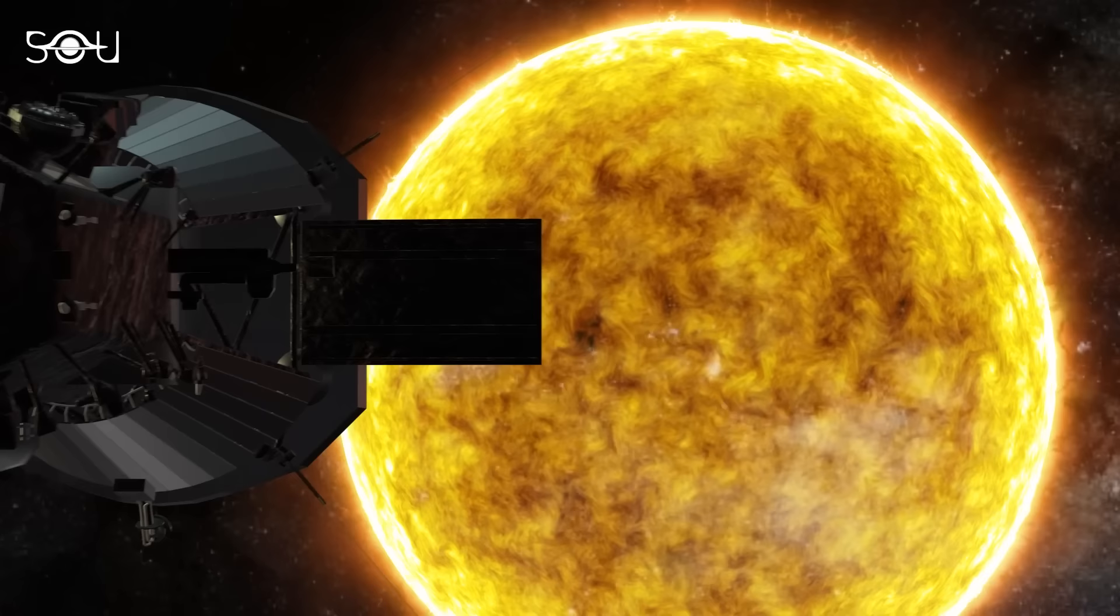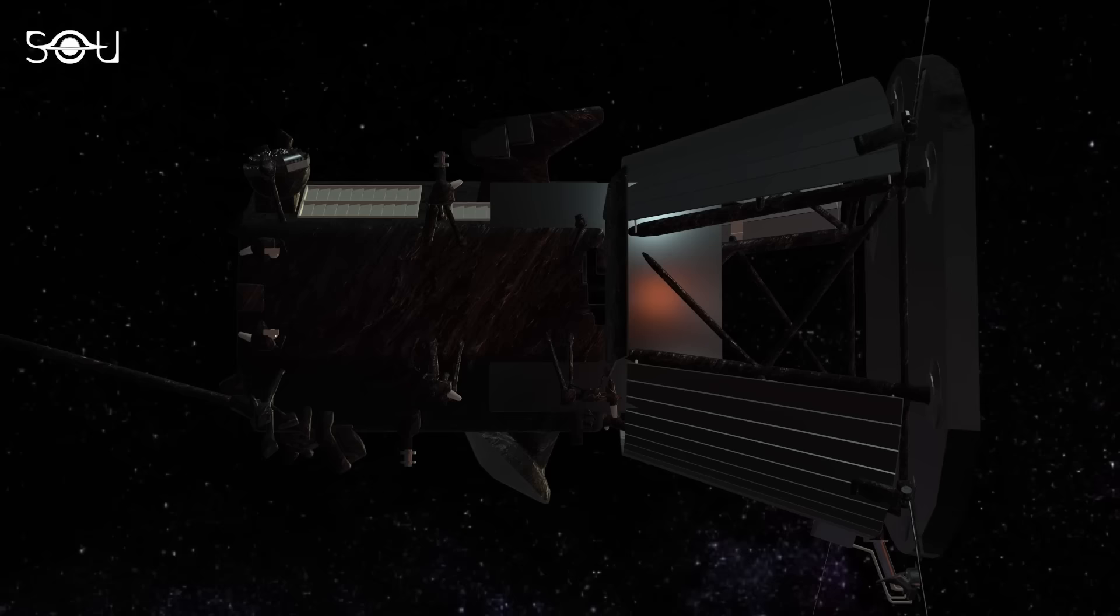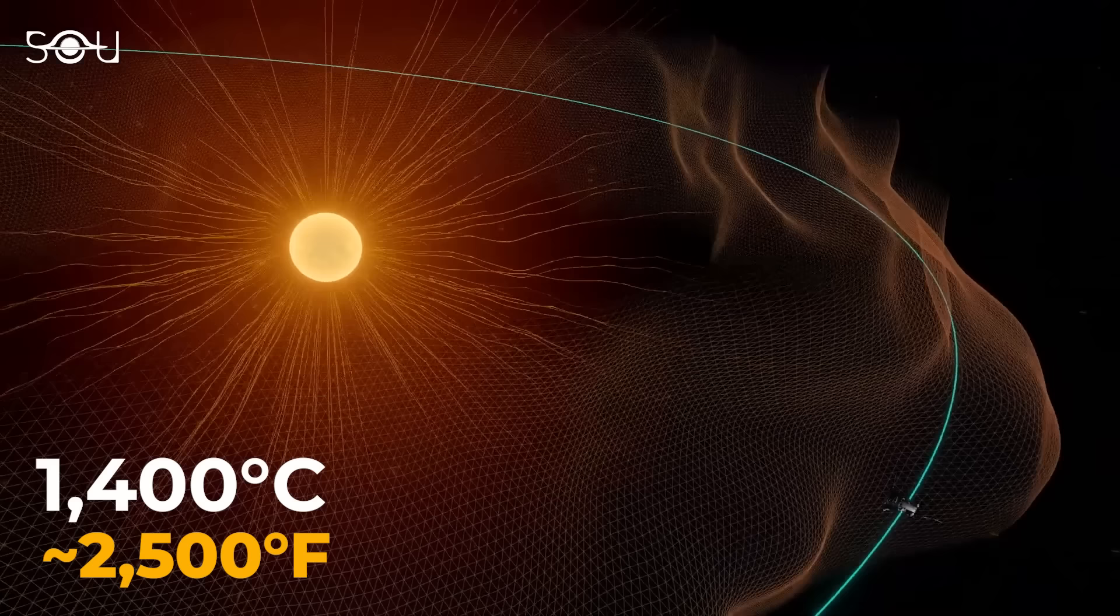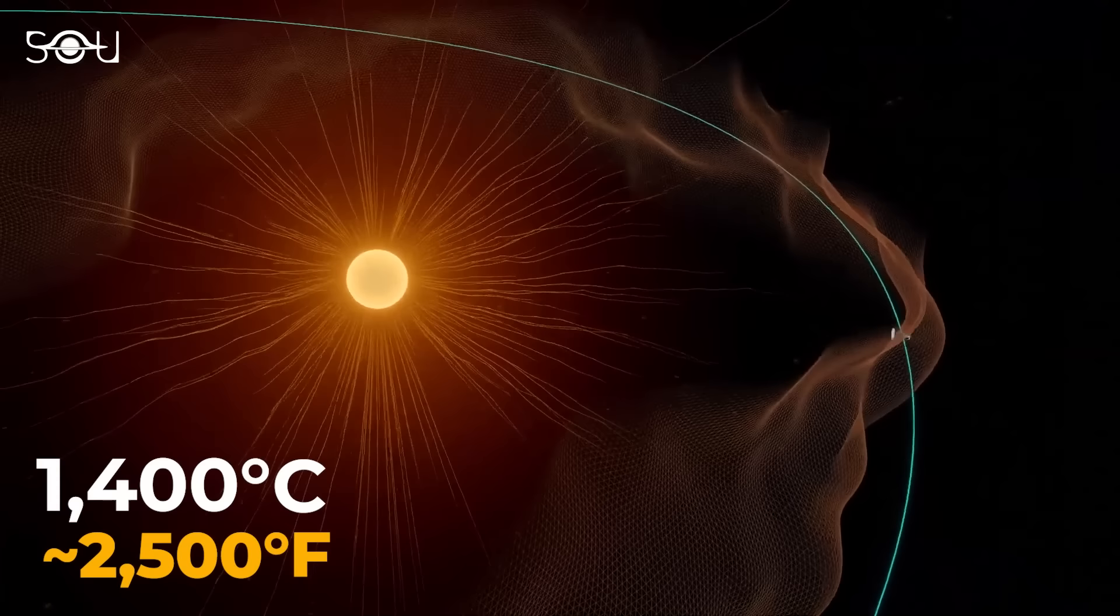Eventually, the sun-facing heat shield only gets heated to 1400 degrees Celsius, or 2500 degrees Fahrenheit, even while passing through an atmosphere of several million degrees.